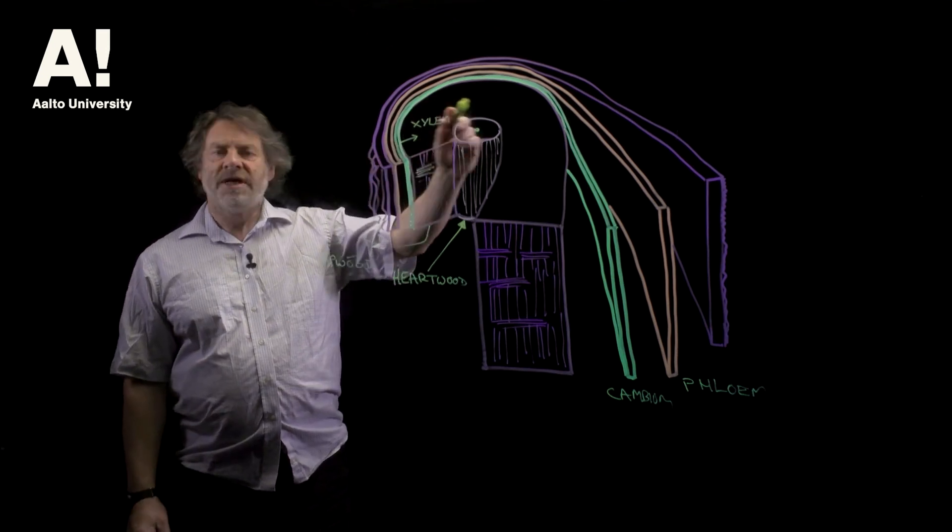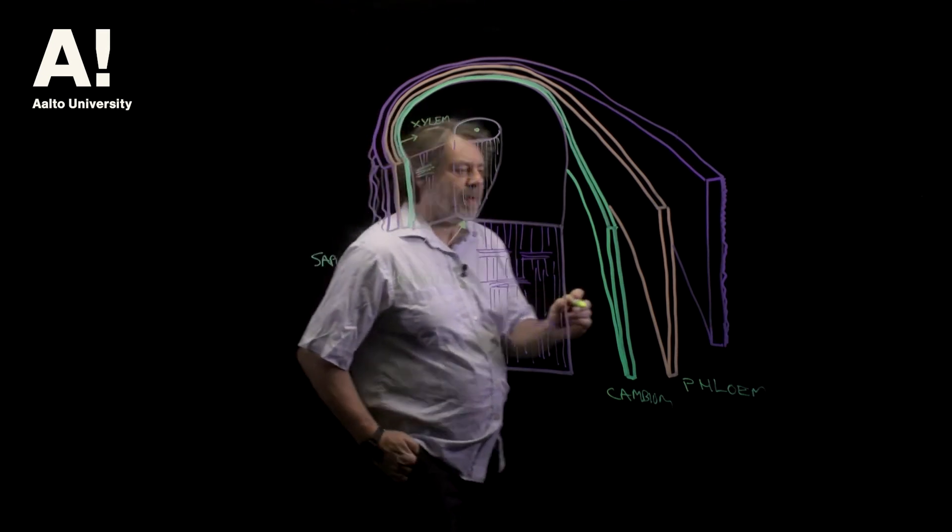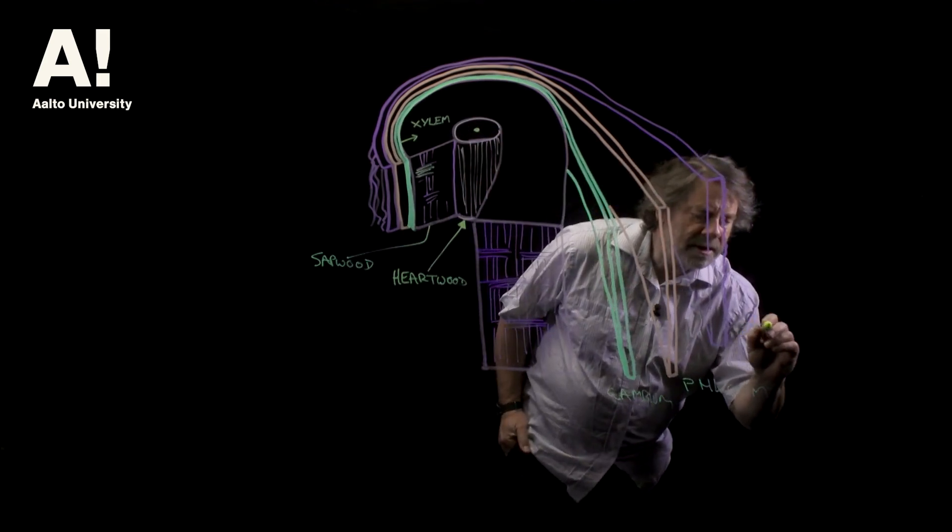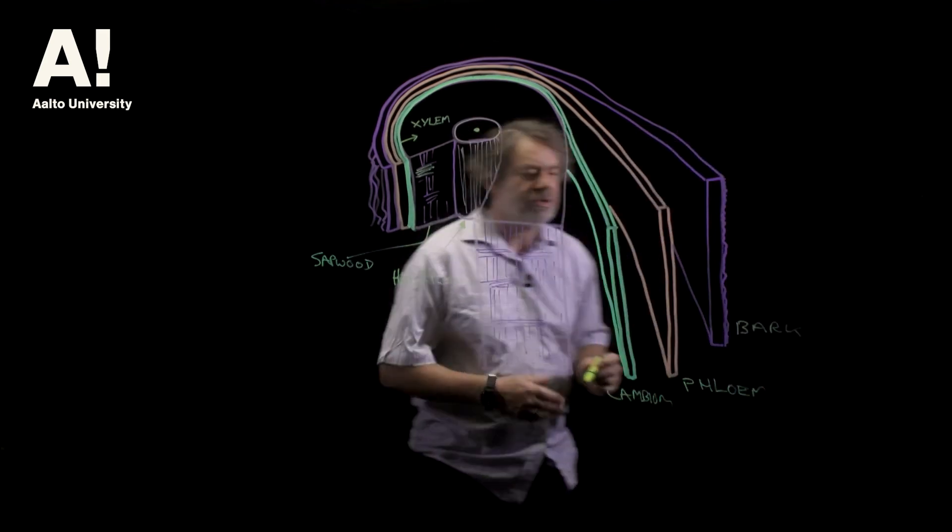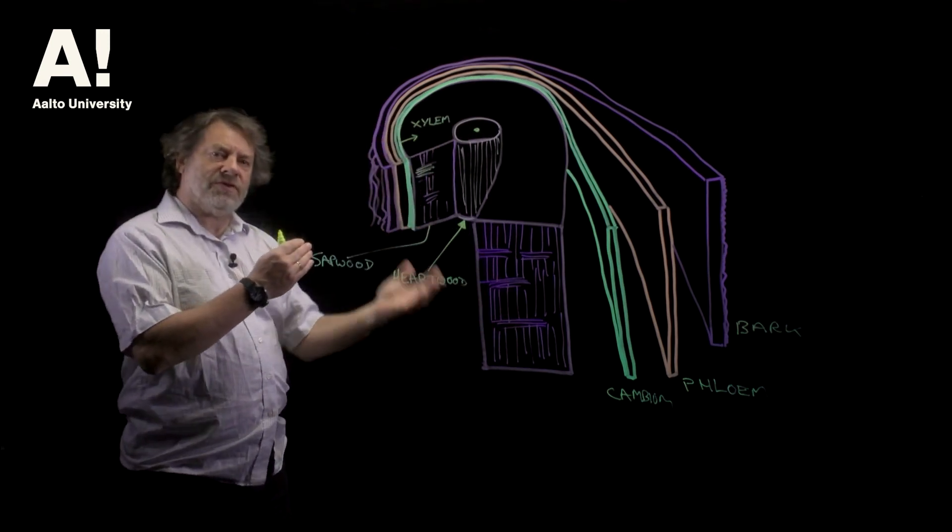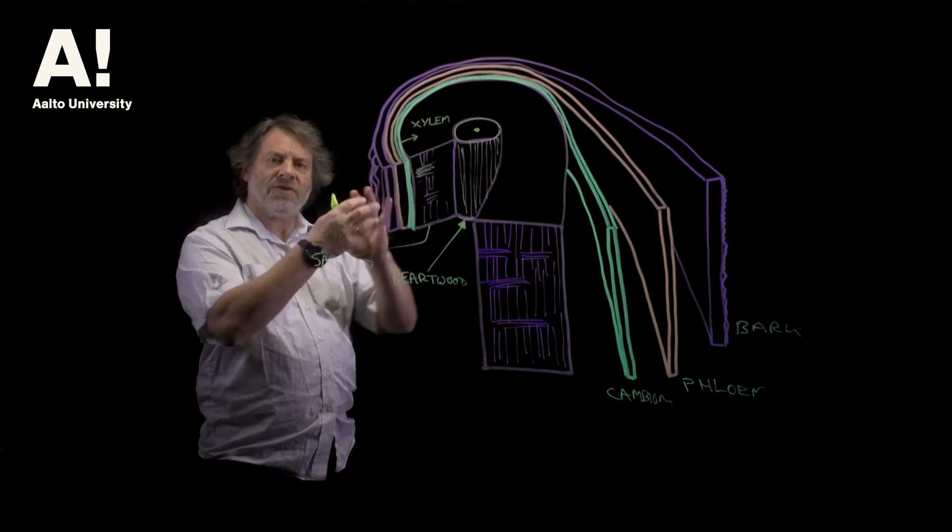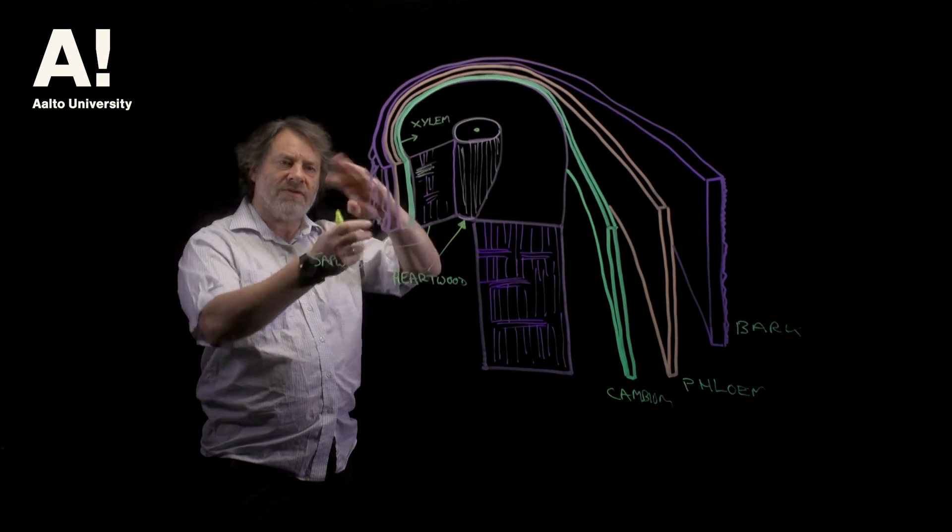Finally, we've got this outer protective layer, which is the bark. And you will notice on most trees either the bark is falling off, is peeling off, or it's very serrated, very rough.